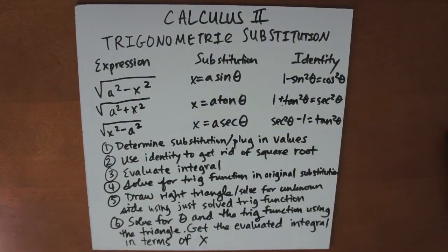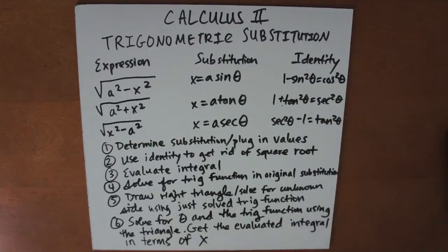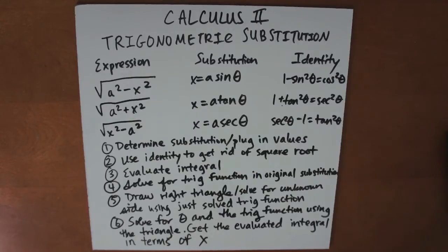Hello, today we will talk about trigonometric substitution. You use trigonometric substitution when you have a square root contained in the integral. So let's start with the example: the square root of a squared minus x squared. You would use the substitution x equals a sine theta and the identity 1 minus sine squared theta equals cosine squared theta.